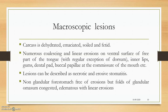The fourth phase is the convalescent phase for animals that survive. Strong animals return to full health within about three weeks, with high immunological activity. Pregnant animals will abort. Gross lesions include a dehydrated, emaciated, soiled, and fetid carcass.